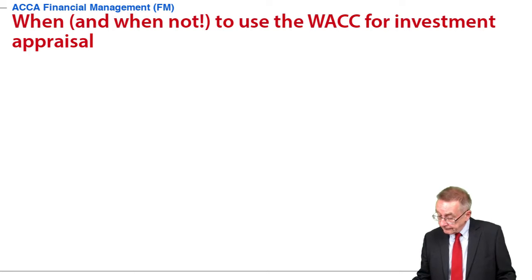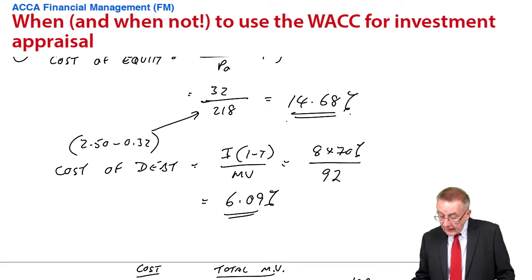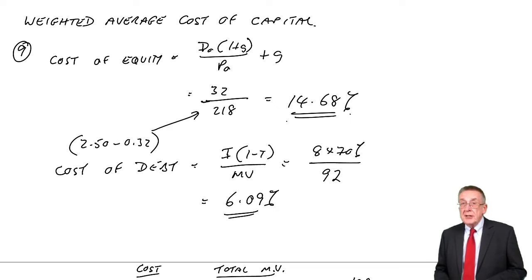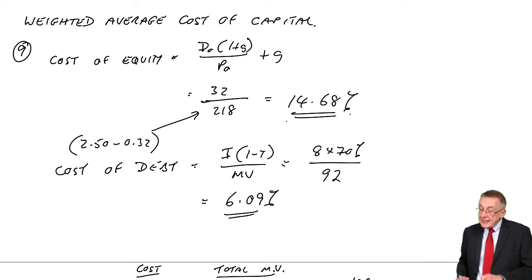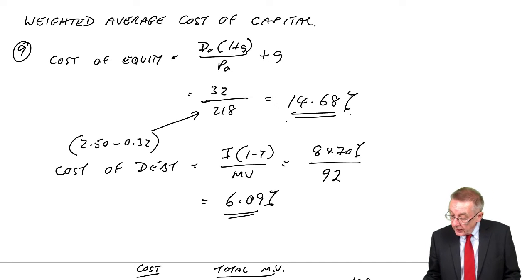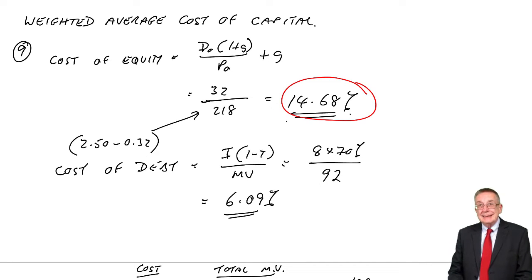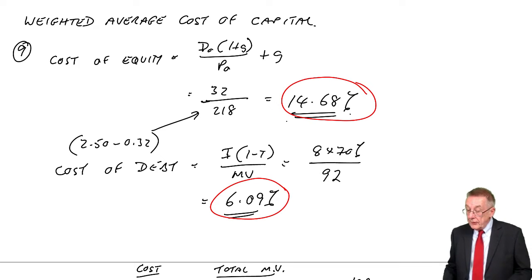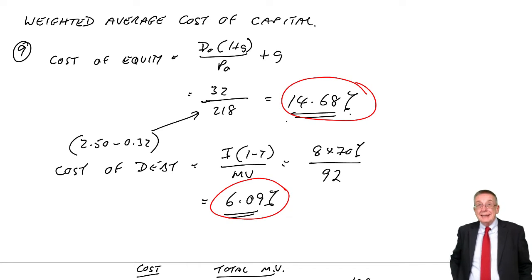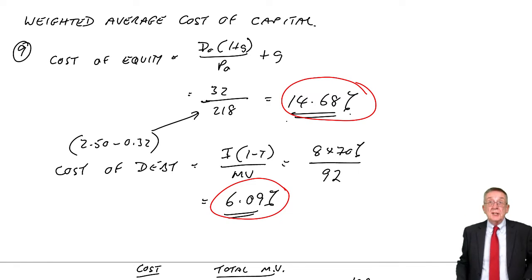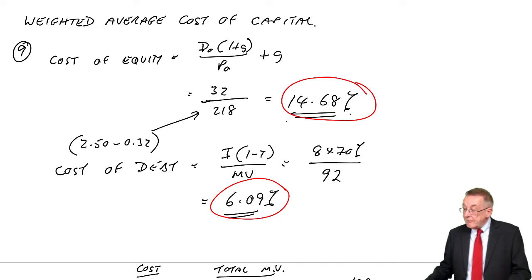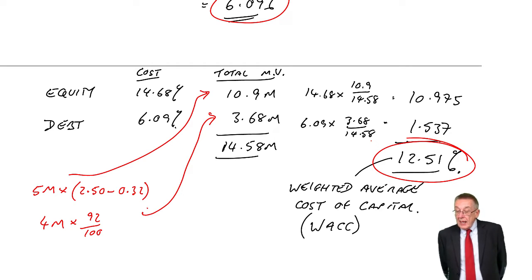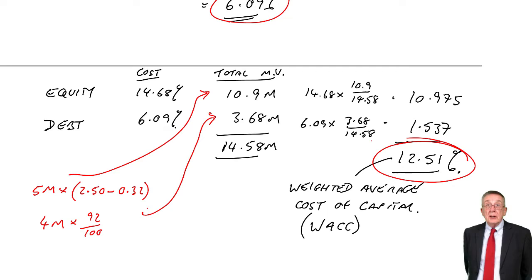To explain what I'm getting at: in the previous chapter, which I hope you've already been through, we worked out a weighted average cost of capital. We did two examples, but in example nine, we calculated the cost of equity at 14.68. We're not going to repeat the calculations. We calculated the cost of debt at 6.09 — we're not surprised the cost of debt is lower.